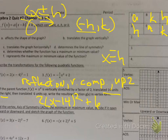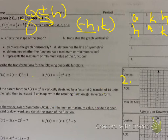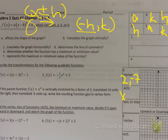Number 5. What's the vertex? 2, negative 7. That pretty much should help you answer the whole question. The axis of symmetry is the x-coordinate of the vertex, so your axis of symmetry is x equals 2. Your max or min value is the y-coordinate, so it's negative 7. Since this is positive, it faces up, which means you have a minimum of negative 7.